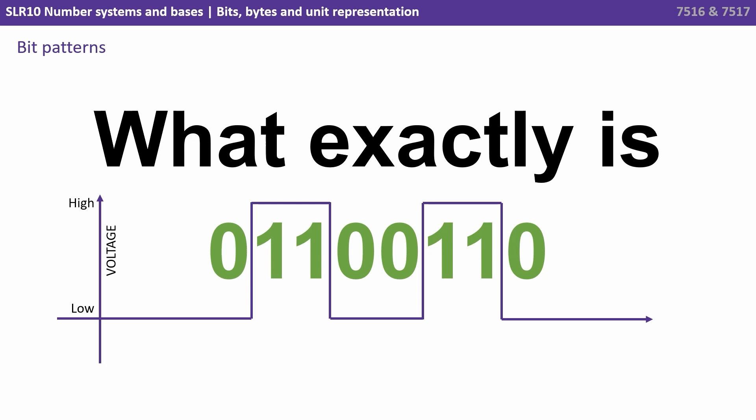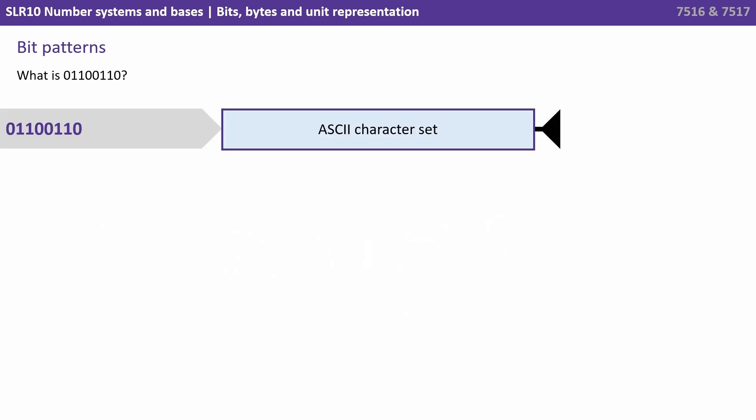So what is a low, high, high, low, low, high, high, low voltage signal? What does it represent? Well, the answer is it all depends. You can't possibly know what a bit pattern represents until you know how to interpret that bit pattern.